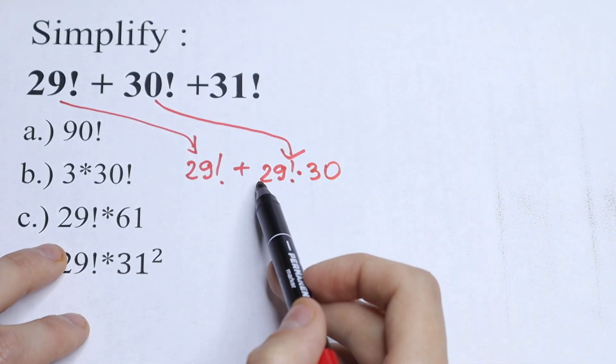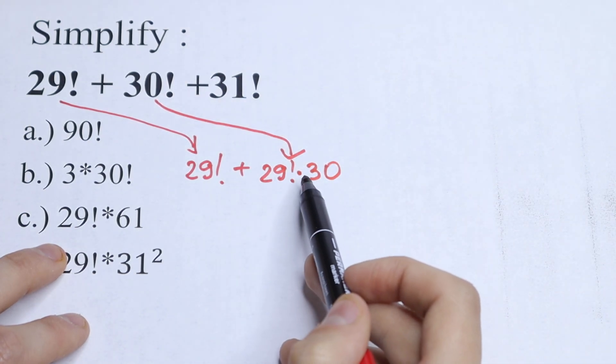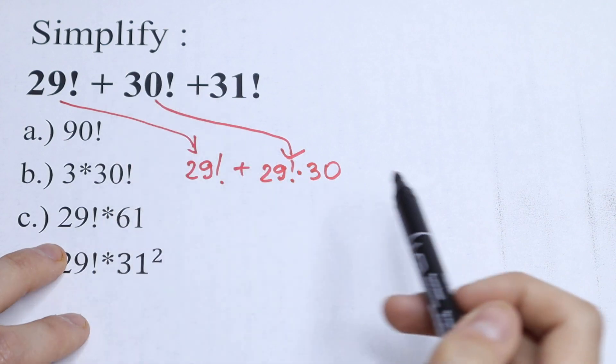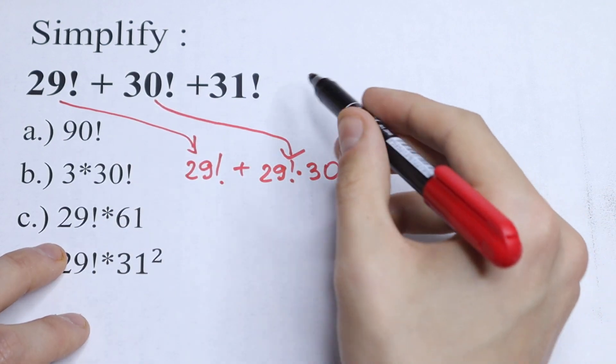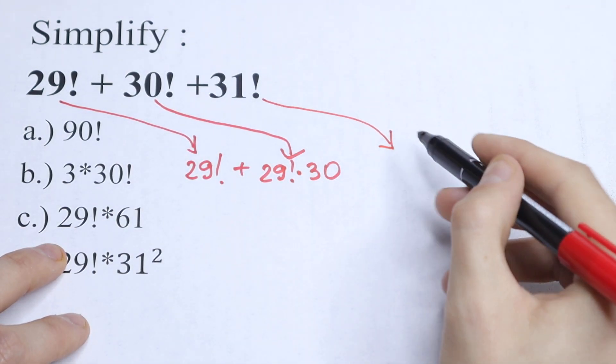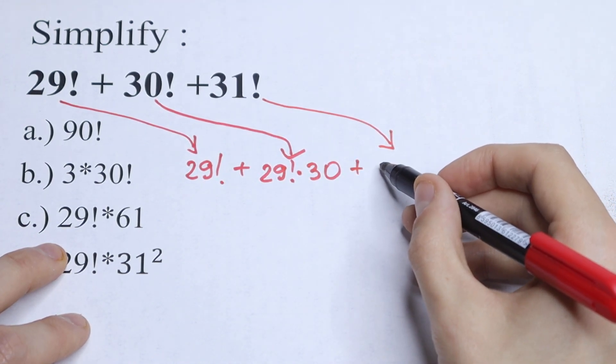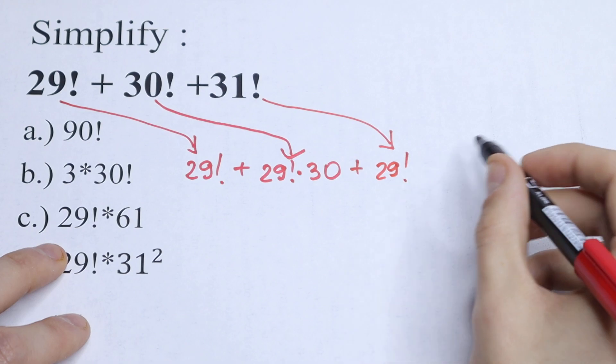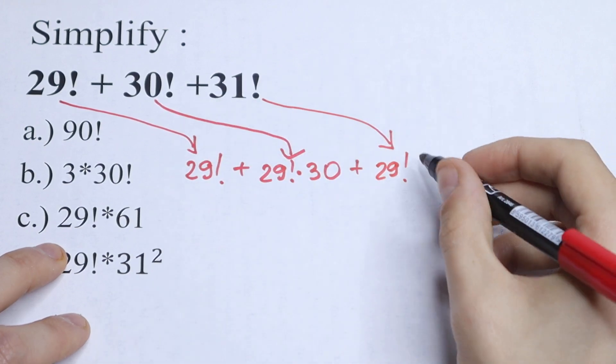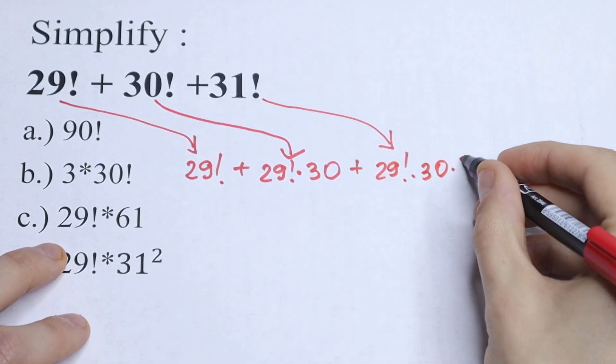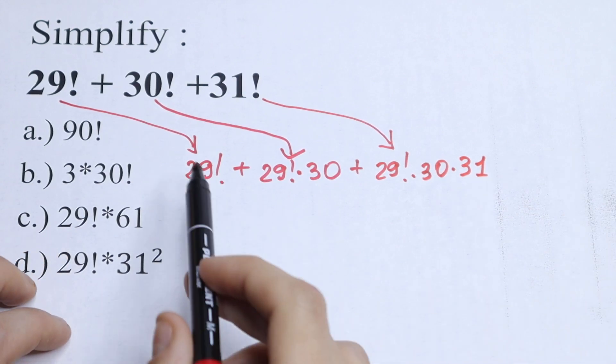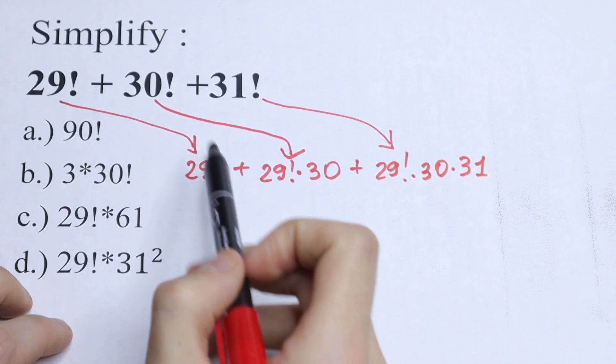So this will be the same, because this is a product from 1 to 29, and we take this 30 and we have our 30 factorial, so nothing changes. And moreover, we can write this 31 factorial as 29 factorial, and we need to multiply this by 30 and times 31. So nothing changes, we just simplify this factorial.